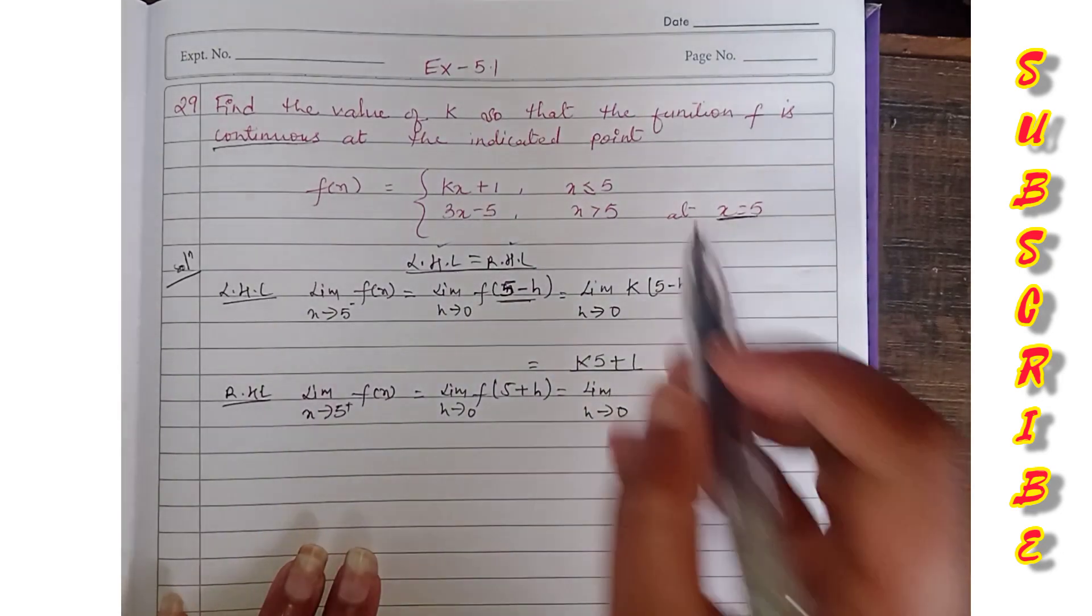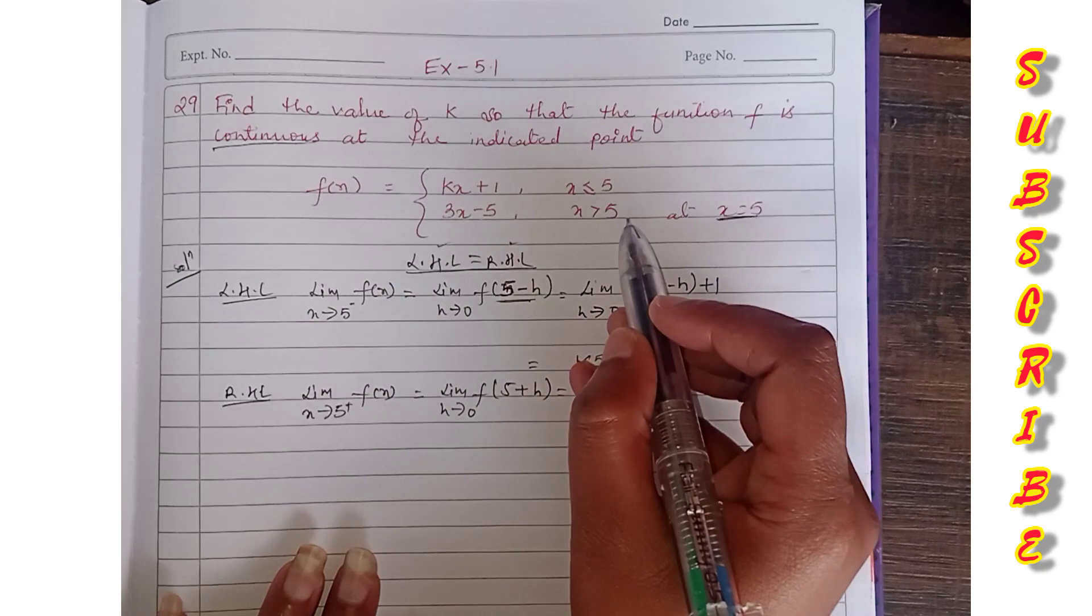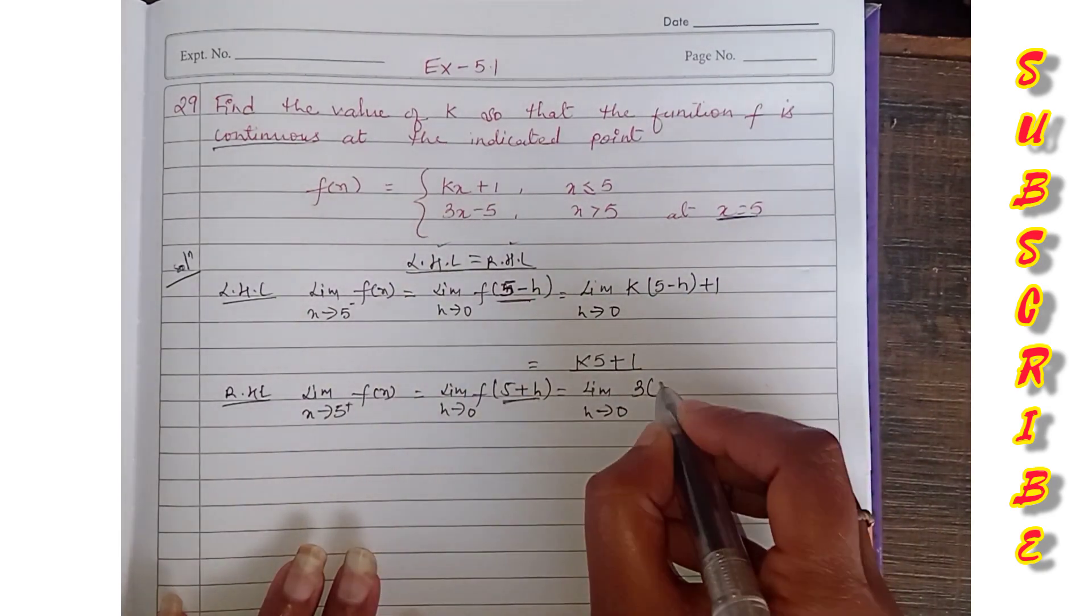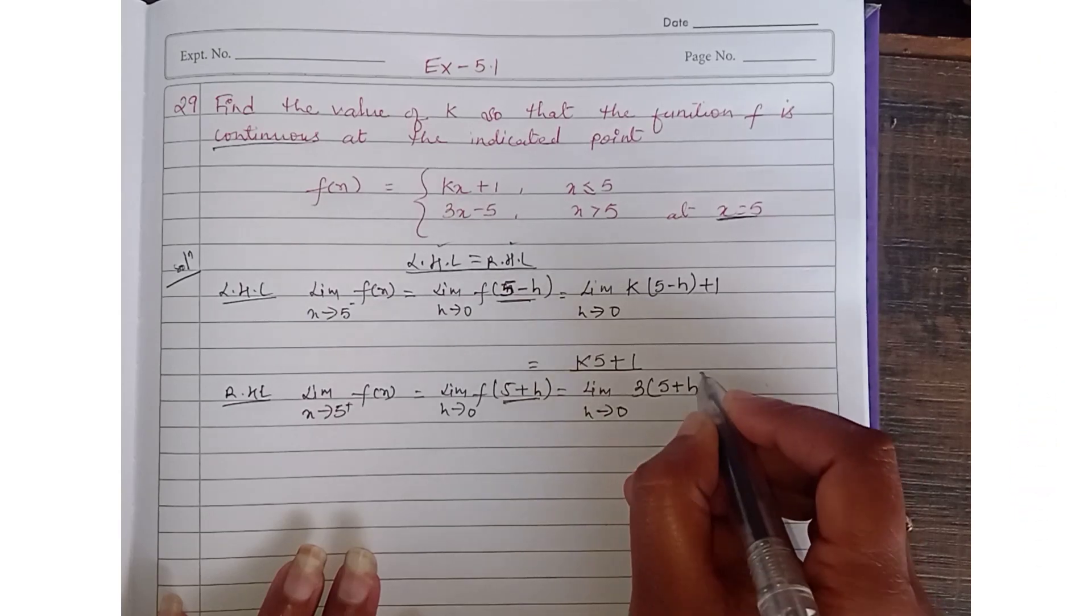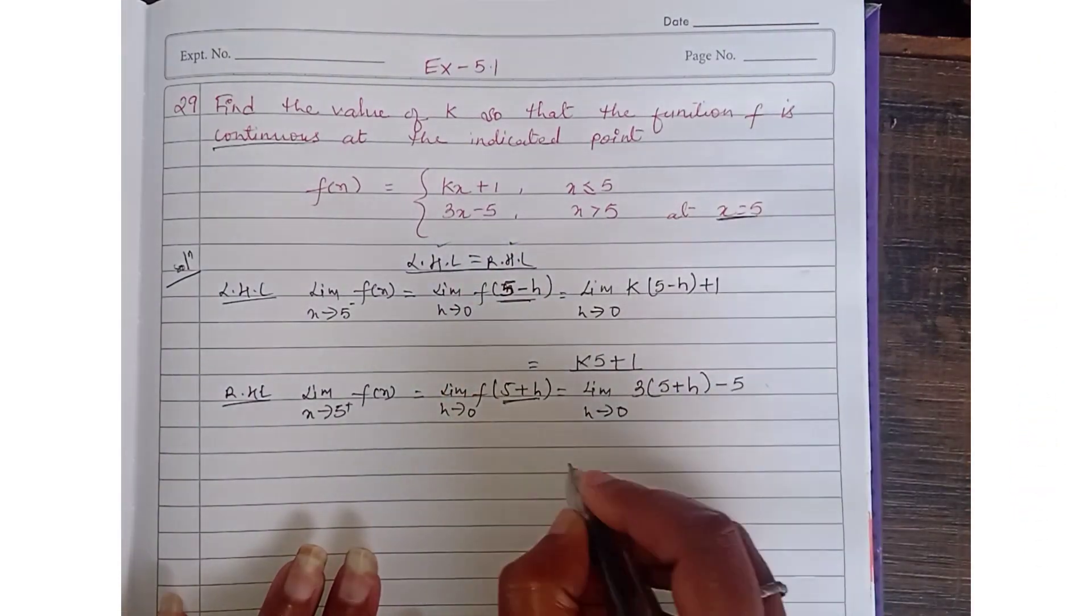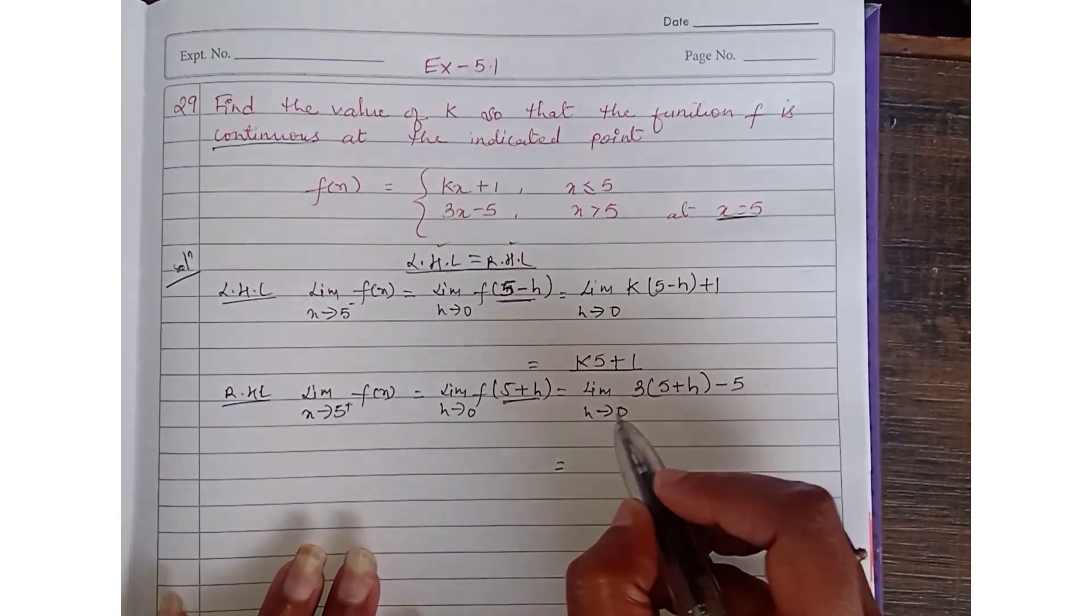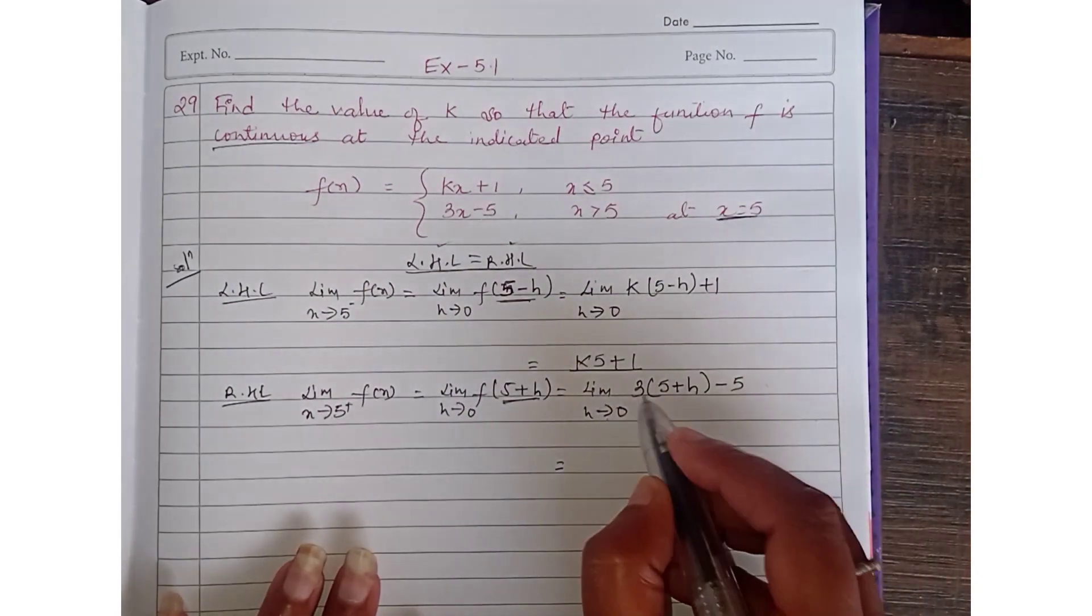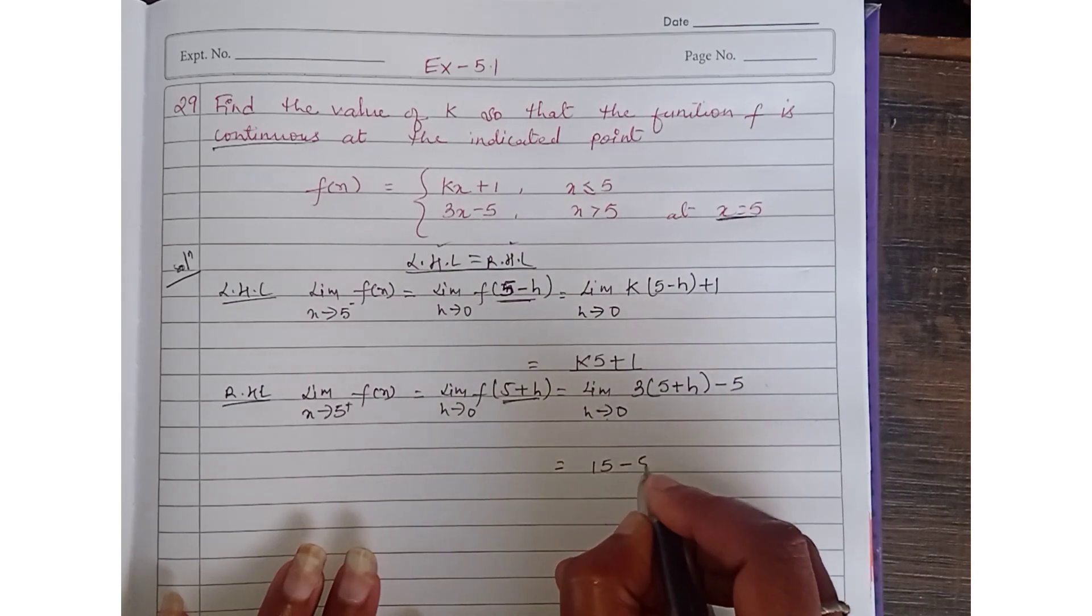5 plus h means right hand limit when x is greater than 5. So here 3x - we will put 5 plus h here, and then minus 5. So now we substitute the value of h. When h goes to 0, 5 plus 0 is 5, so 15 minus 5 equals 10.